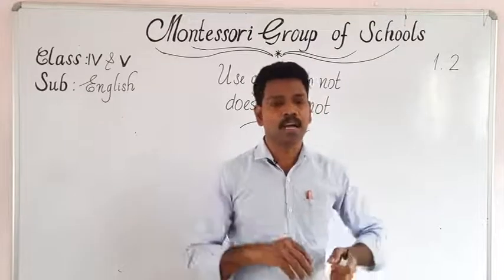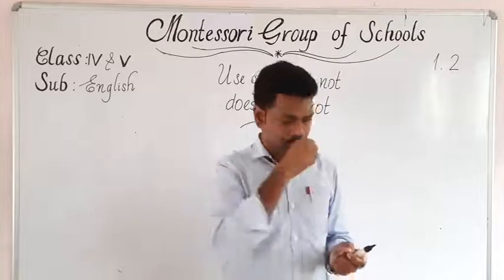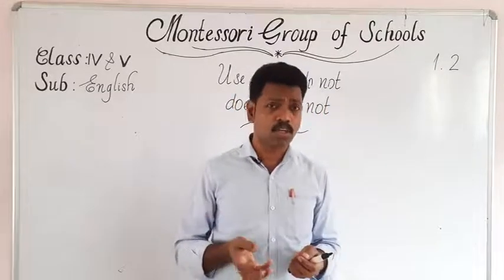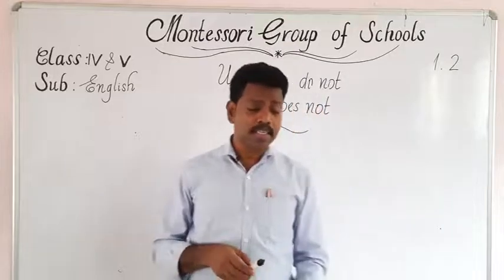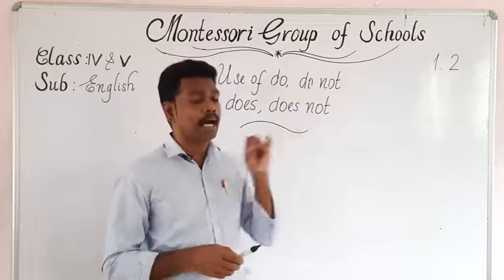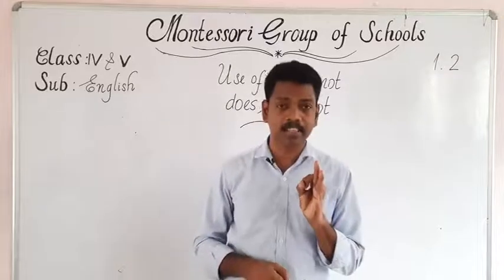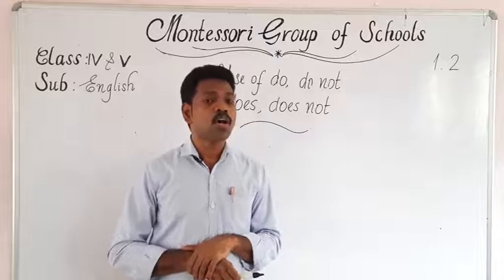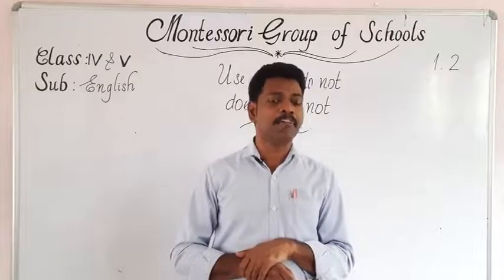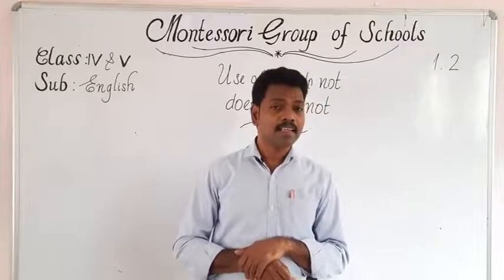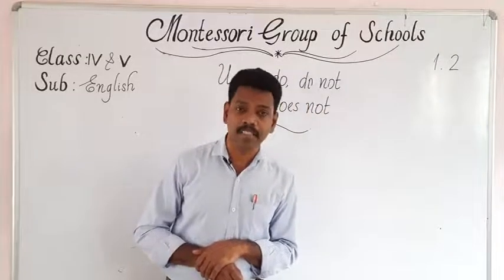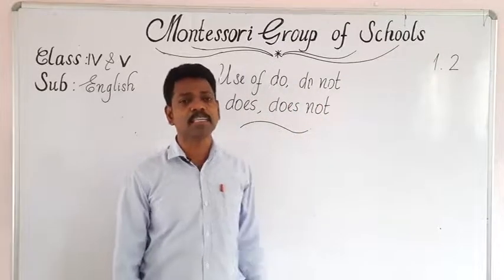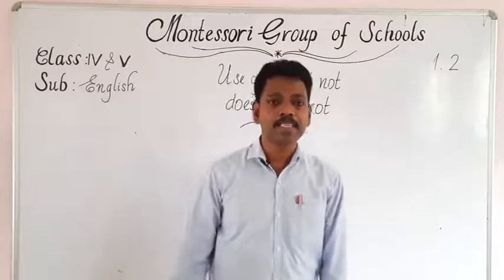We use do, do not, does, and does not in affirmative and interrogative sentences. What is the rule for affirmative? Don't forget — it comes only after the subject. In an affirmative sentence, when we use do, do not, does, or does not, it comes only after the subject.